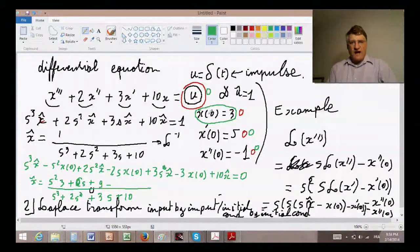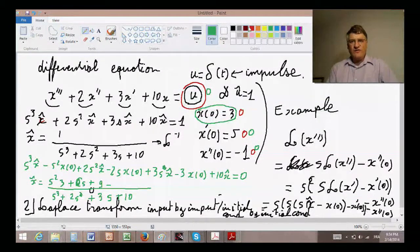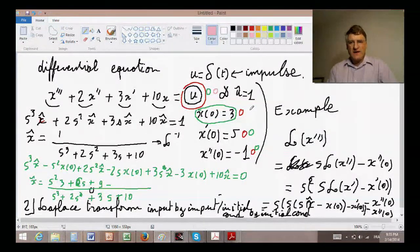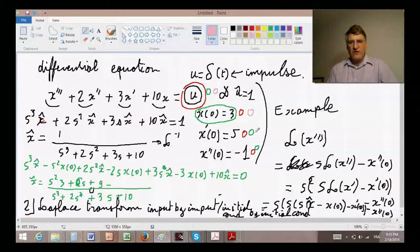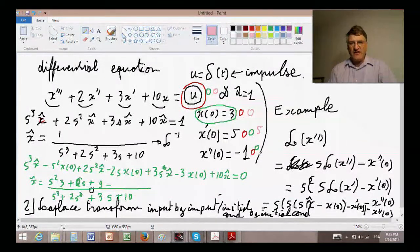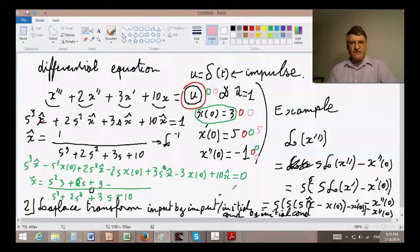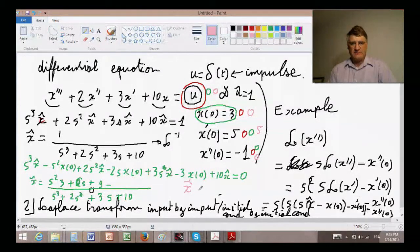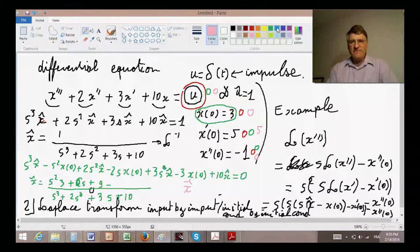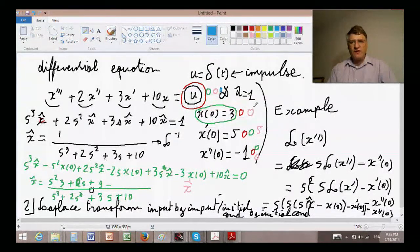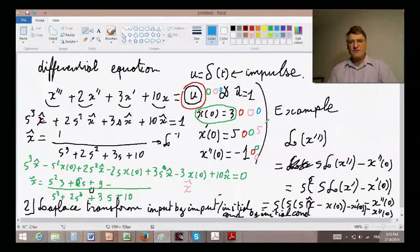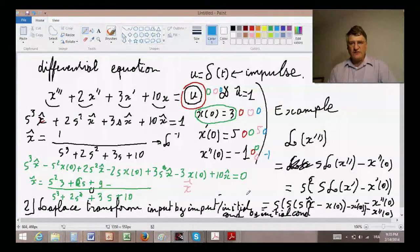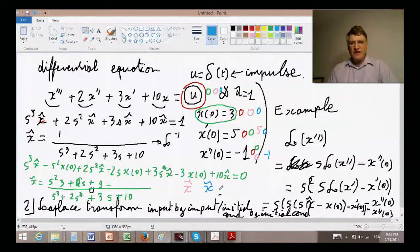And likewise we solve for u is equal to 0, x of 0 is equal to 0, x prime of 0 is equal to 5, and x second of 0 is equal to 0. That will give us another x hat. And finally we say u is equal to 0, x is equal to 0, x prime is equal to 0, and x second is equal to minus 1, and that gives us another x hat.